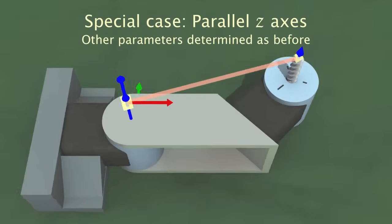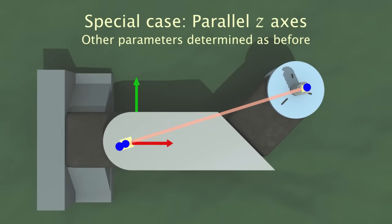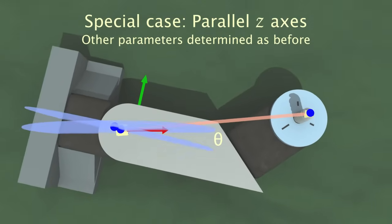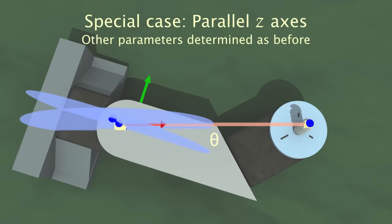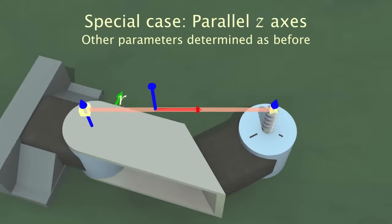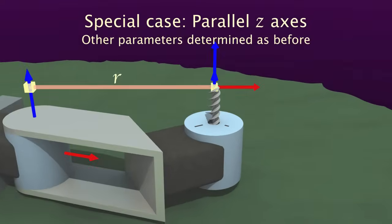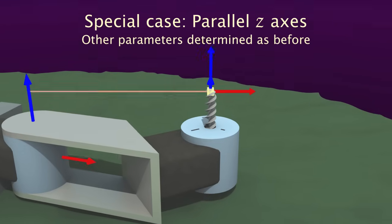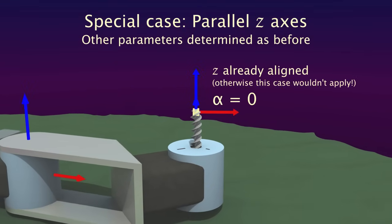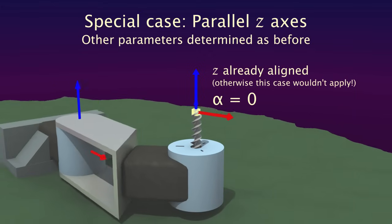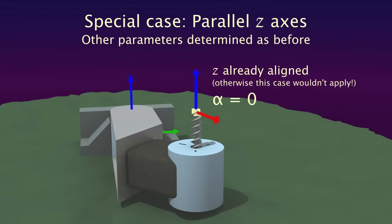The other parameters are the same as before. Theta rotates about z to align the x-axis with the normal, and r translates out along the normal to reach the new origin. Alpha is already known to be zero in this case, since the z-axes must be parallel for this to apply, thus no rotation is needed.